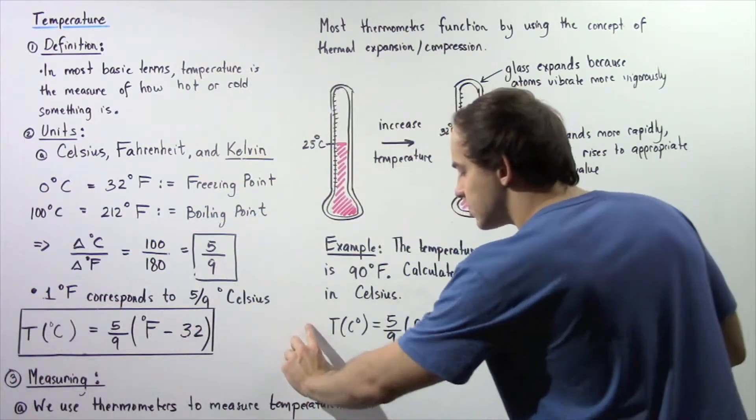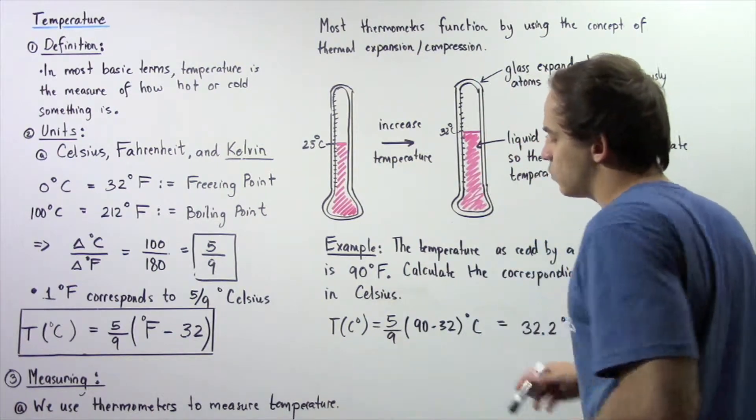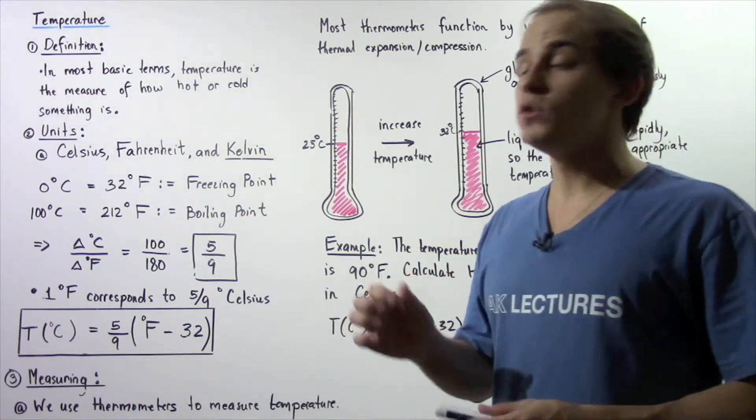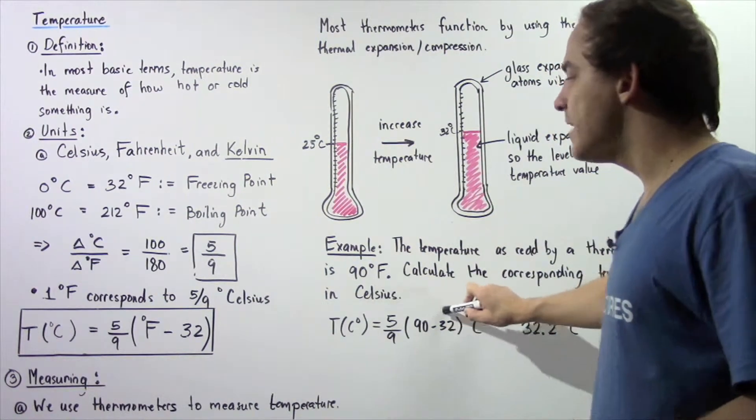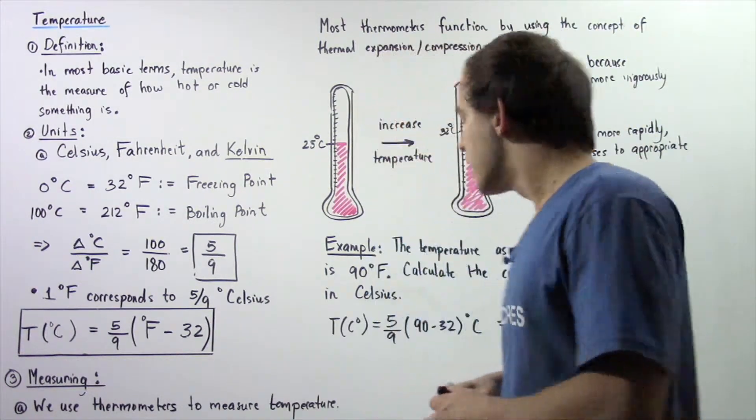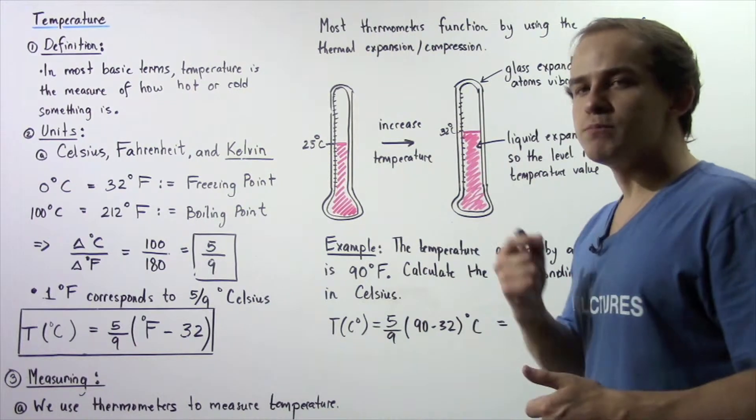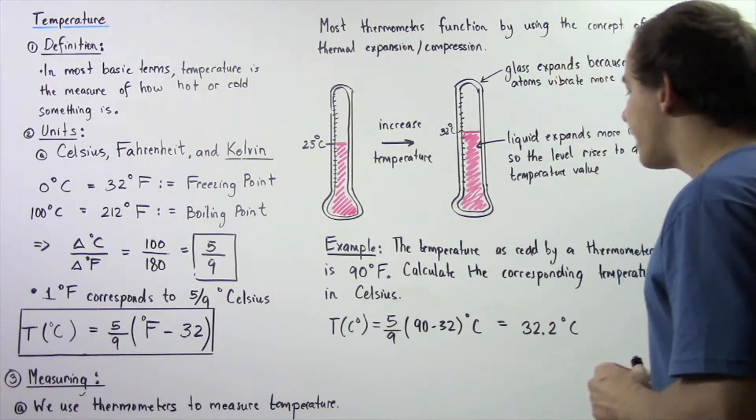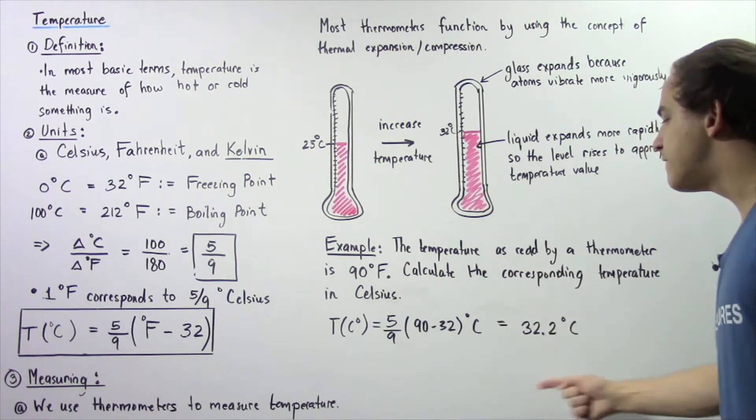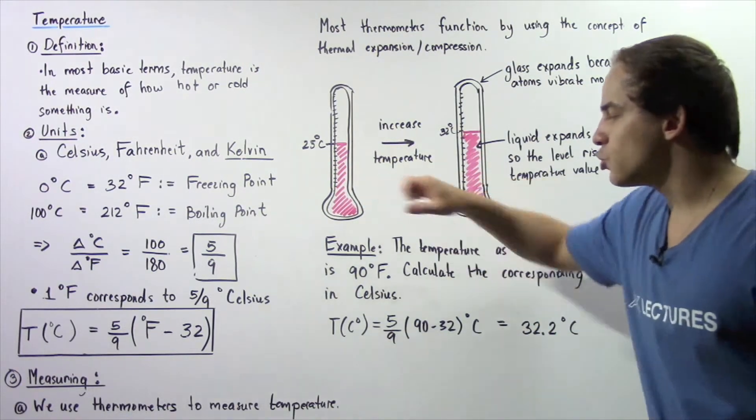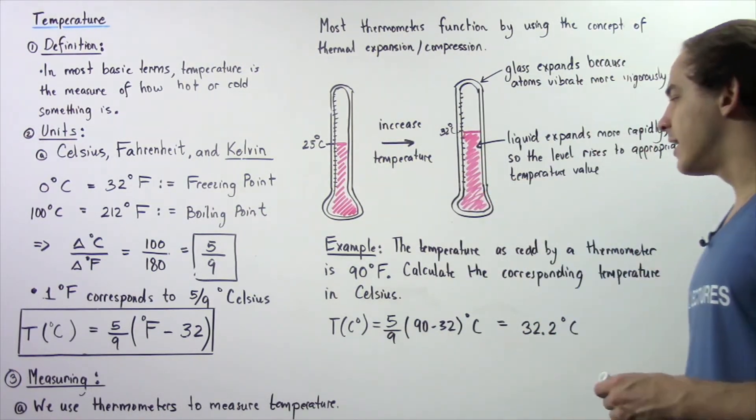We essentially want to use this equation. The temperature in Celsius is equal to 5 divided by 9 multiplied by the given temperature in Fahrenheit, 90 minus 32. So we subtract these values, multiply by 5 divided by 9, and we obtain a value of 32.2 degrees Celsius. This is the corresponding value in Celsius that corresponds to 90 degrees Fahrenheit.